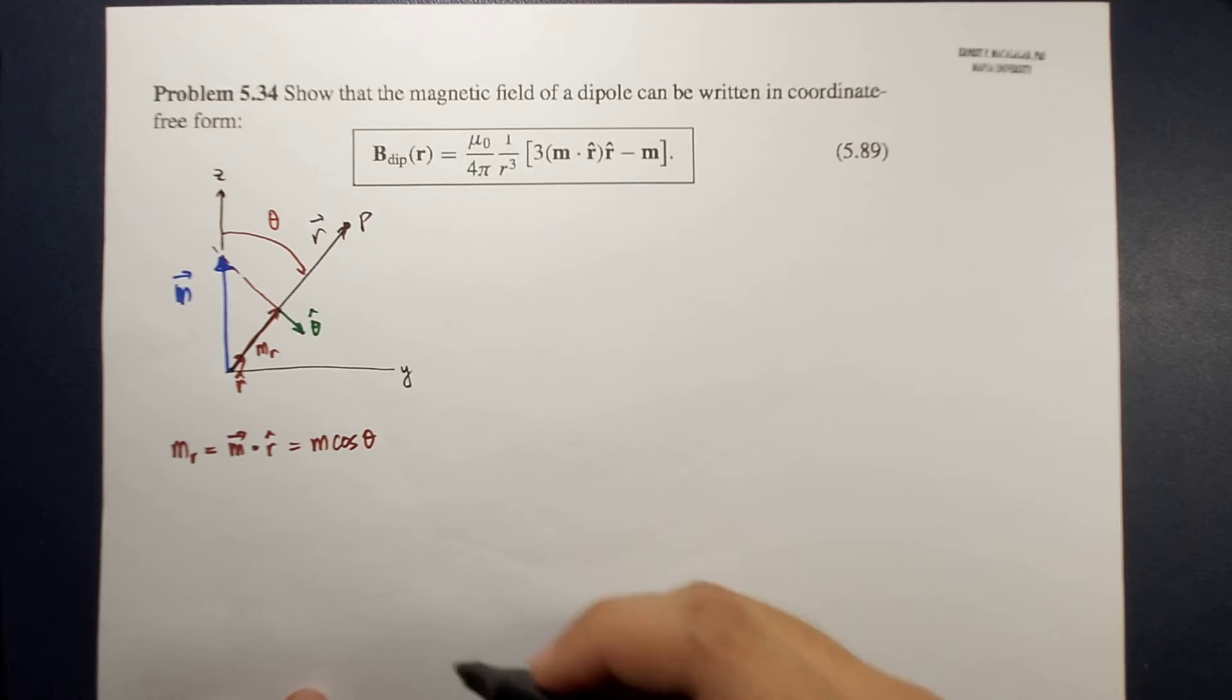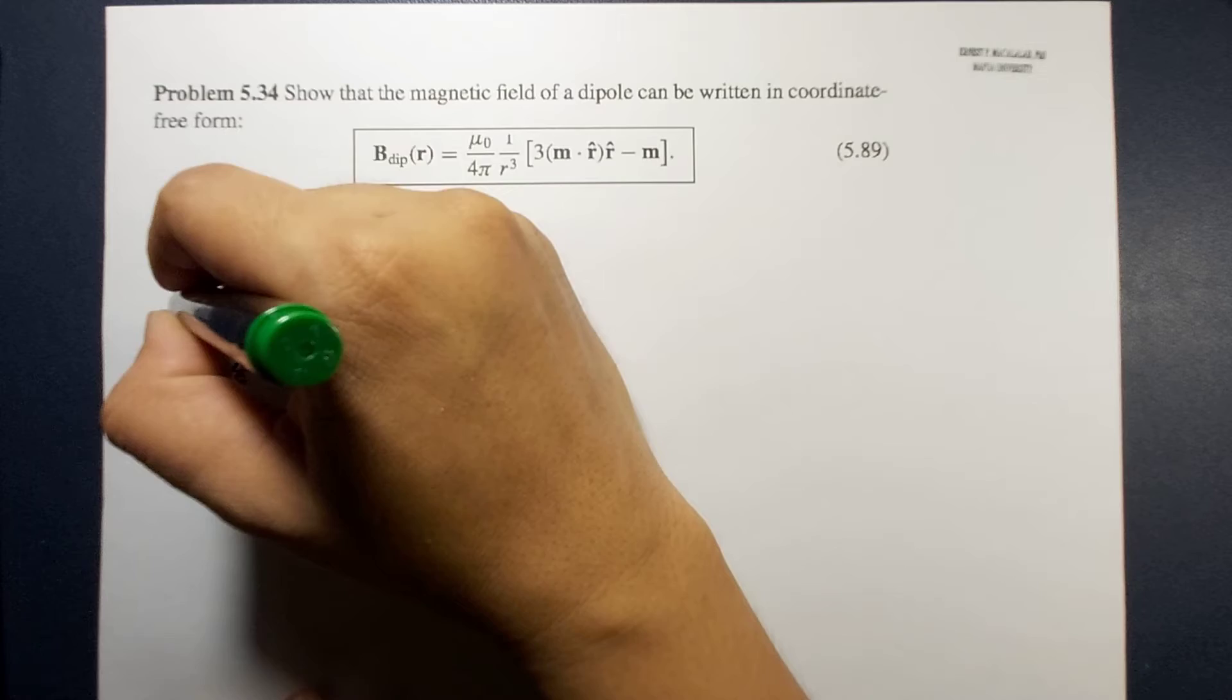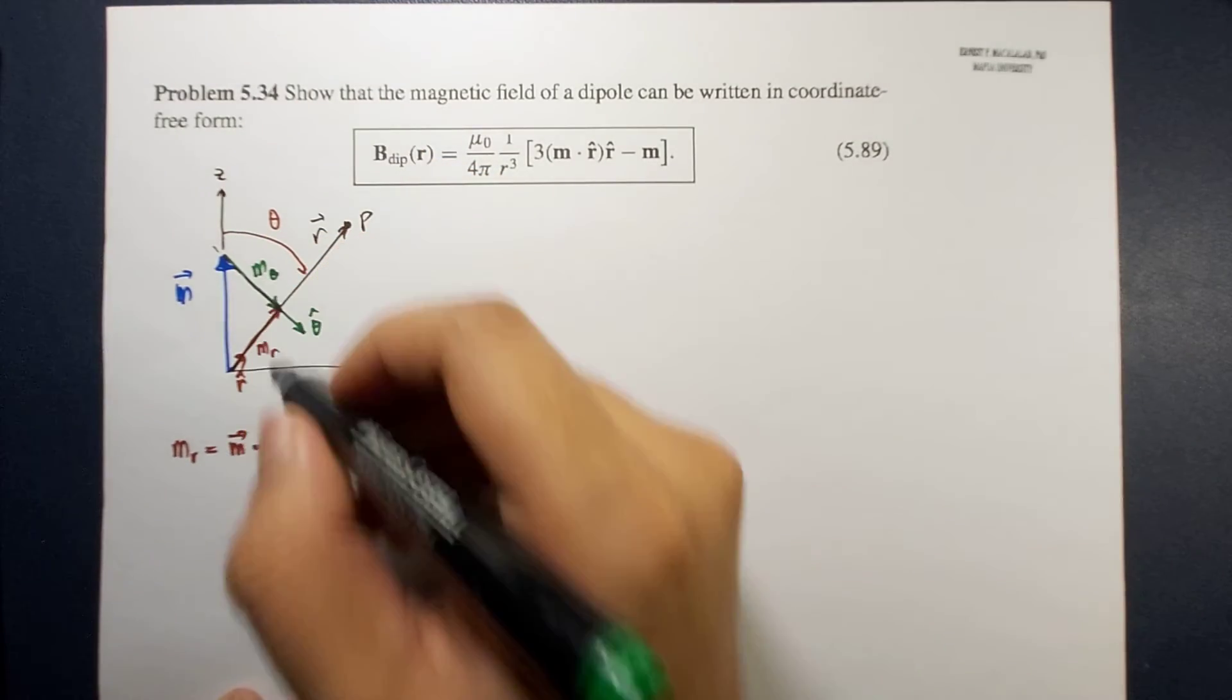So that means this projection is the projection of m along the direction of r hat along the direction of theta.